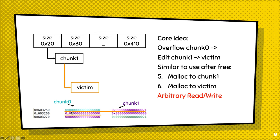You can write past chunk zero into the part of chunk one and change the field that stores the location of the next free chunk. If we overwrite this part and replace it with the address of a victim memory, then after we do two mallocs, on the second malloc we'll be able to get the victim address. From there, we will be able to do arbitrary read and write.